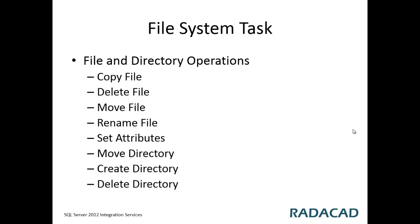The File System Task is one of the most important tasks in SQL Server Integration Services. It uses the System.IO .NET object library class to perform operations like copy file, delete file, move file, and rename file. It also uses methods to set attributes like hidden and archive, and you can do directory operations like moving, creating, or removing a directory.